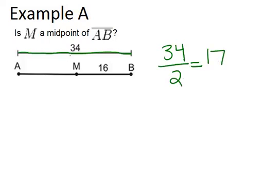So the midpoint of this segment should be 17 units in the middle. There should be a 17 on either side. Since this is 16, that means that this must be 18, and it's not actually a midpoint. So the answer is no. To be a midpoint, it has to be exactly in the middle.